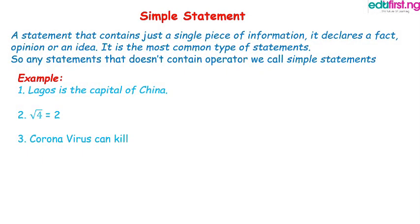We have simple statements. Simple statements are just pieces of information that declare a fact. They don't have operators. Operators are linking words like and, but, with, therefore — words that link one or two sentences together. Any statement that is logical and does not have any of these operators is called a simple logical statement. Example 1: Lagos is the capital of China. Is it true? No, so it is false — but you can easily say it is false, so it is a logical statement. It is a simple logical statement because it does not have any operator. Number 2: Square root of 4 is equal to 2. Is the square root of 4 actually equal to 2? Yes, it is. So it is a simple logical statement because it does not have an operator.